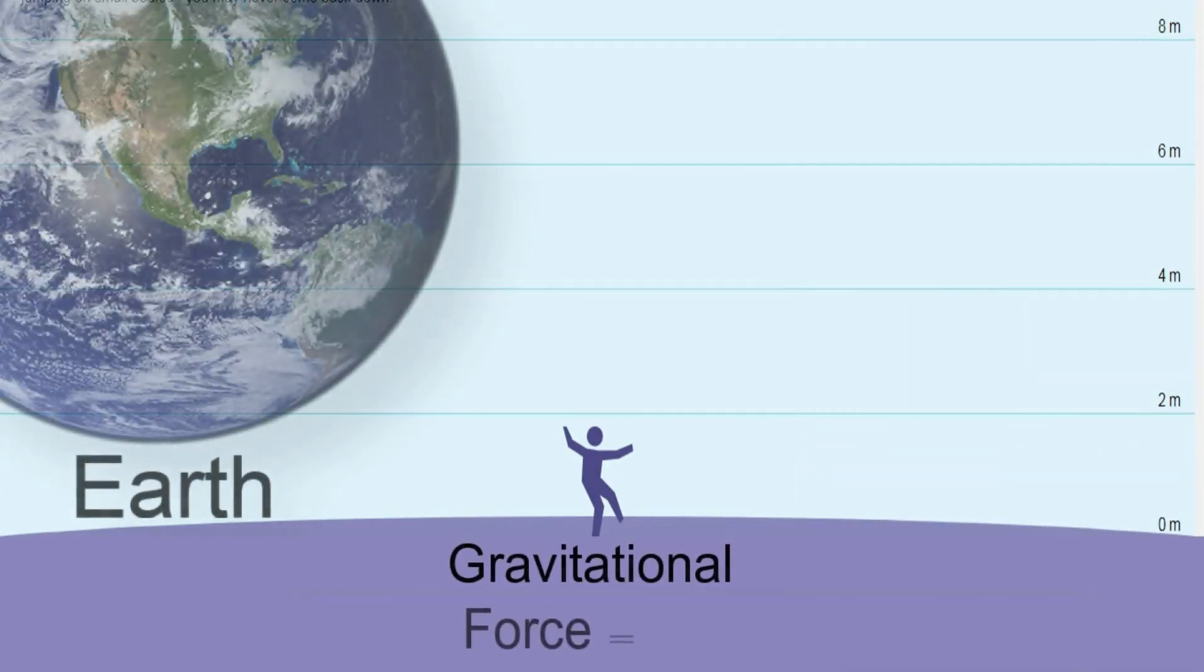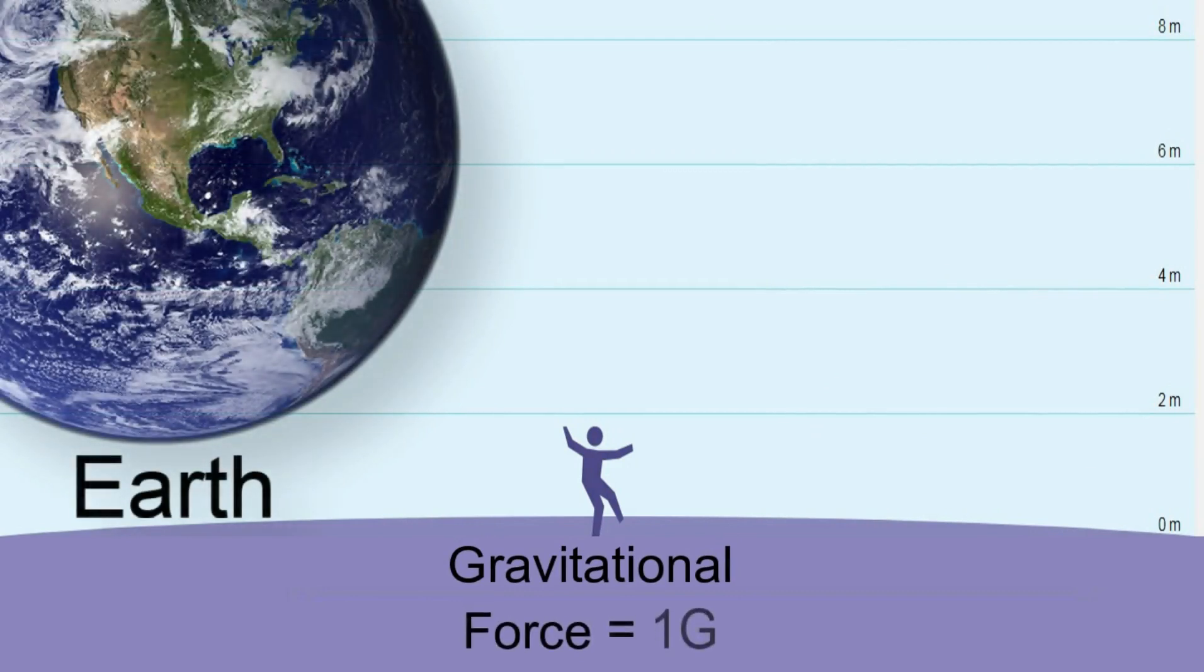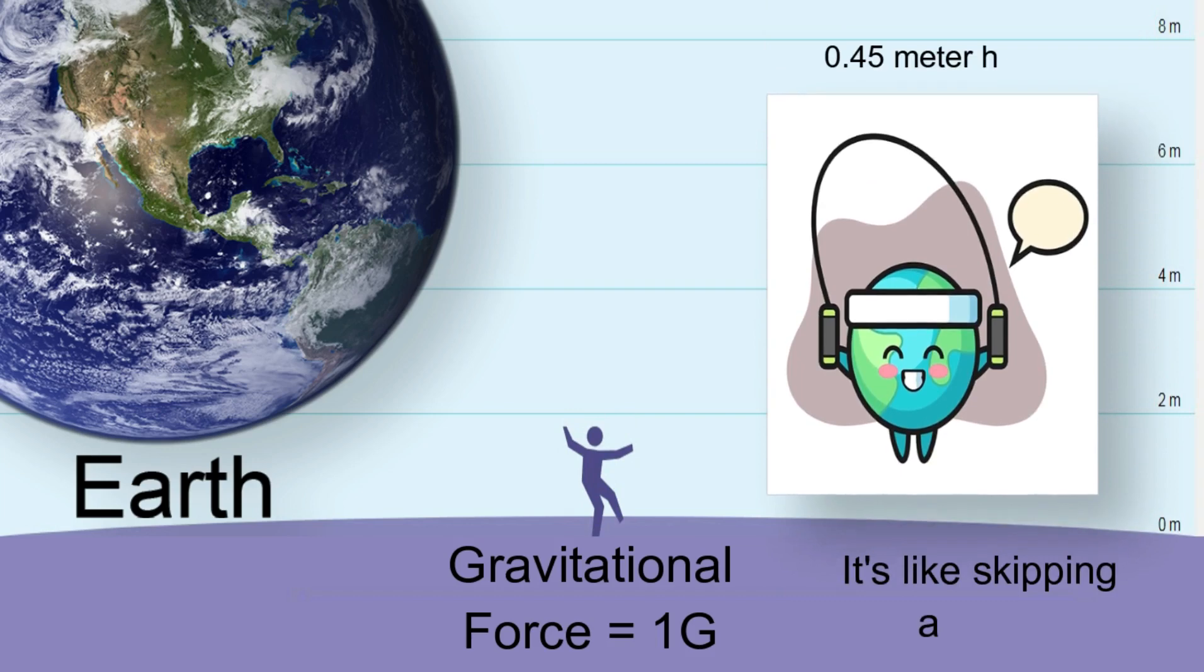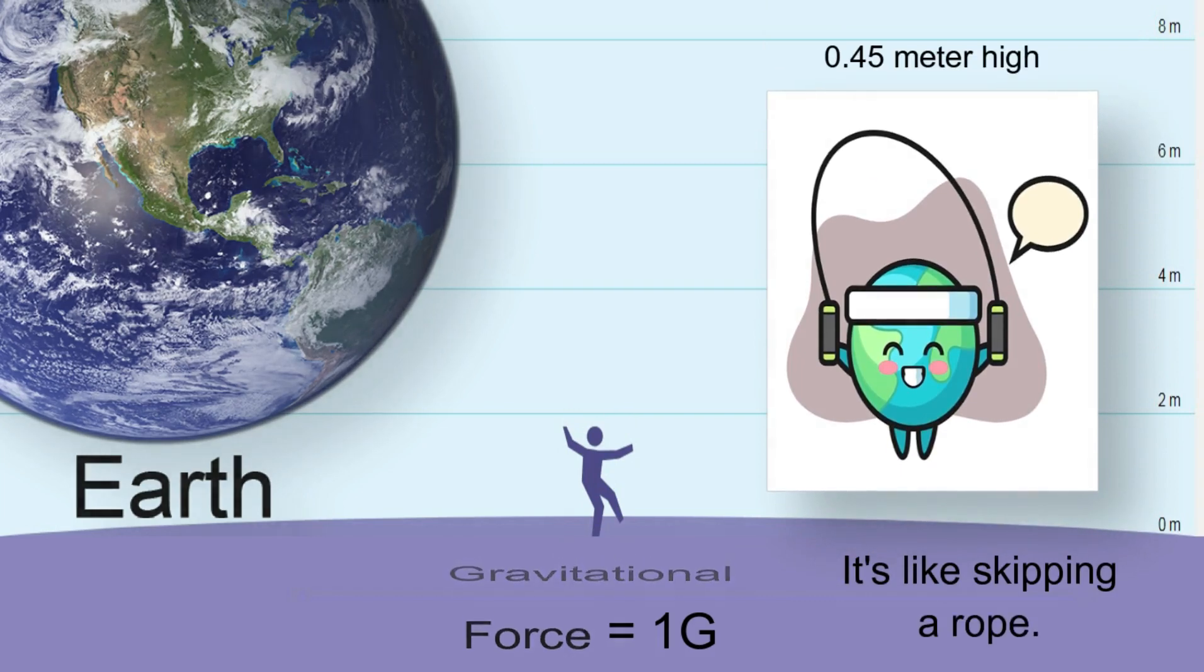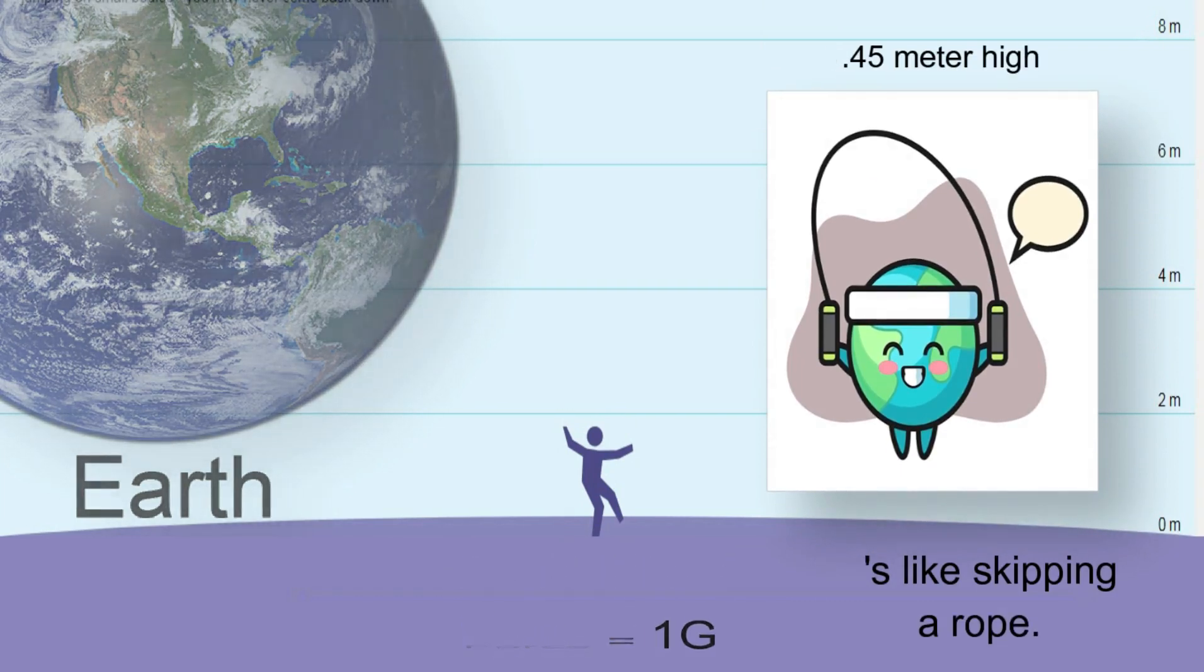The Earth: The gravitational force on the Earth is 1 G-force. Average jump height on planet Earth for the human being is as high as you are skipping a rope. The Guinness World Record for highest box jump is 1.47 meters.